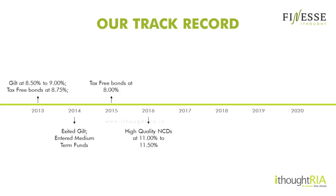I also want to walk you through our track record in terms of what we've done since 2013. We saw government securities or GILT funds trading at 8.5% to 9% and tax free bonds at 8.75% — both relatively risk free investments. In 2014, we exited GILT and entered medium term funds. In 2015, we again found tax free bonds attractive. And then in 2016, we saw a lot of value in investing into high quality NCDs where the yield was around 11 to 11.5%.